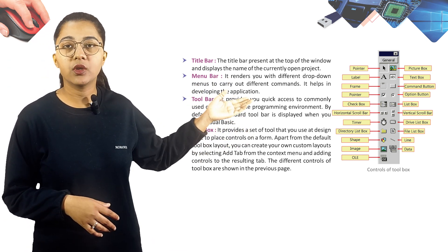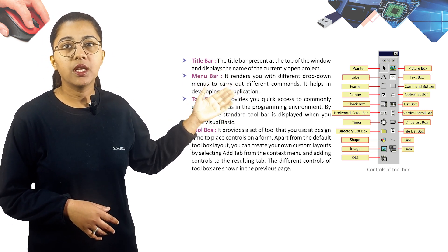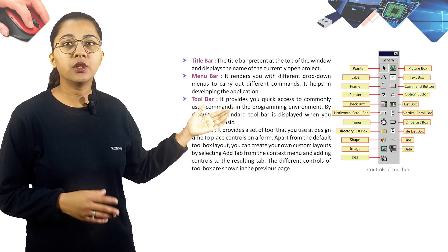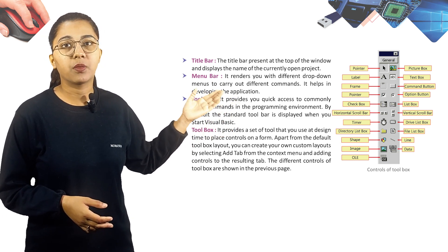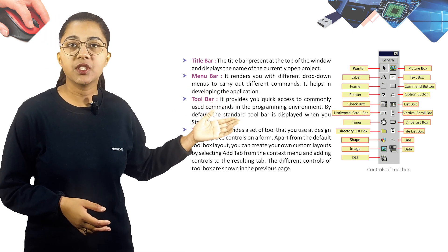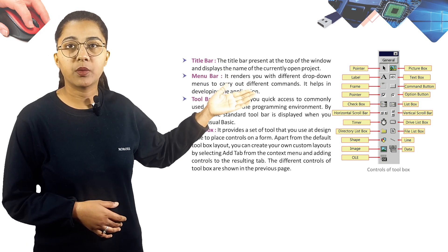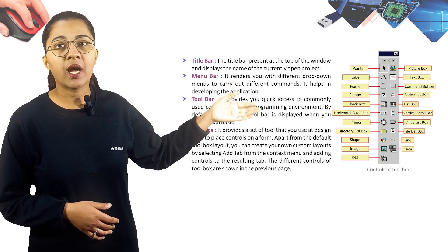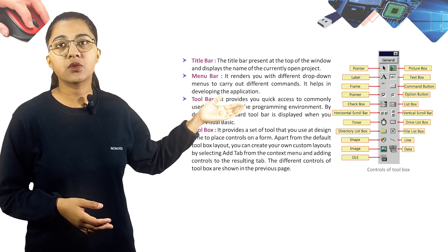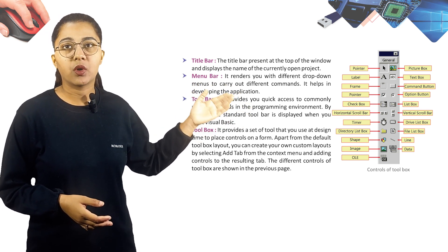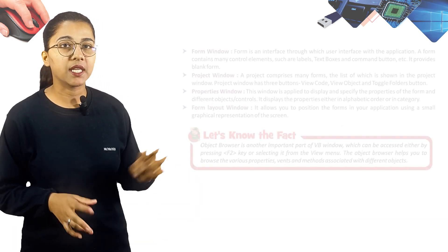The different controls of the Toolbox include: Pointer, Label, Frame, Check Box, Horizontal Scroll Bar, Timer, Directory List Box, Shape, Image, OLE, Picture Box, Text Box, Command Button, Option Button, List Box, Vertical Scroll Bar, Drive List Box, File List Box, Line, and Data.